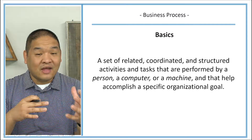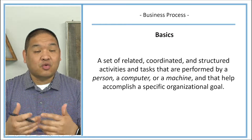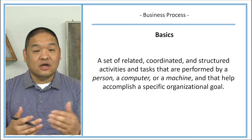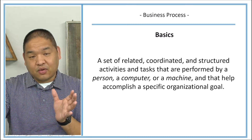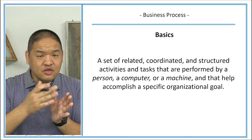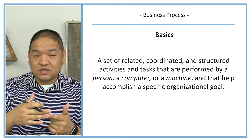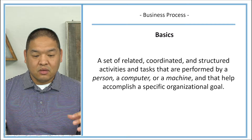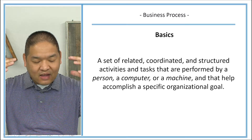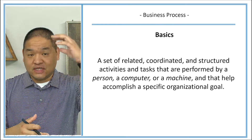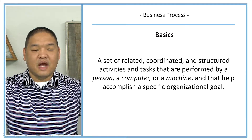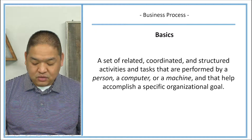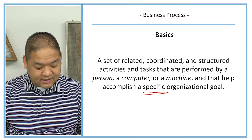Those tasks can be completed by a person, a computer, or a machine. A person might fill out documents to schedule something; a computer might process that request into the system; and a machine might actually manufacture a product to sell to a customer. All of these tasks work together to accomplish a specific organizational goal. No single business process can do everything — multiple processes must work together to help achieve the overall organizational goals.